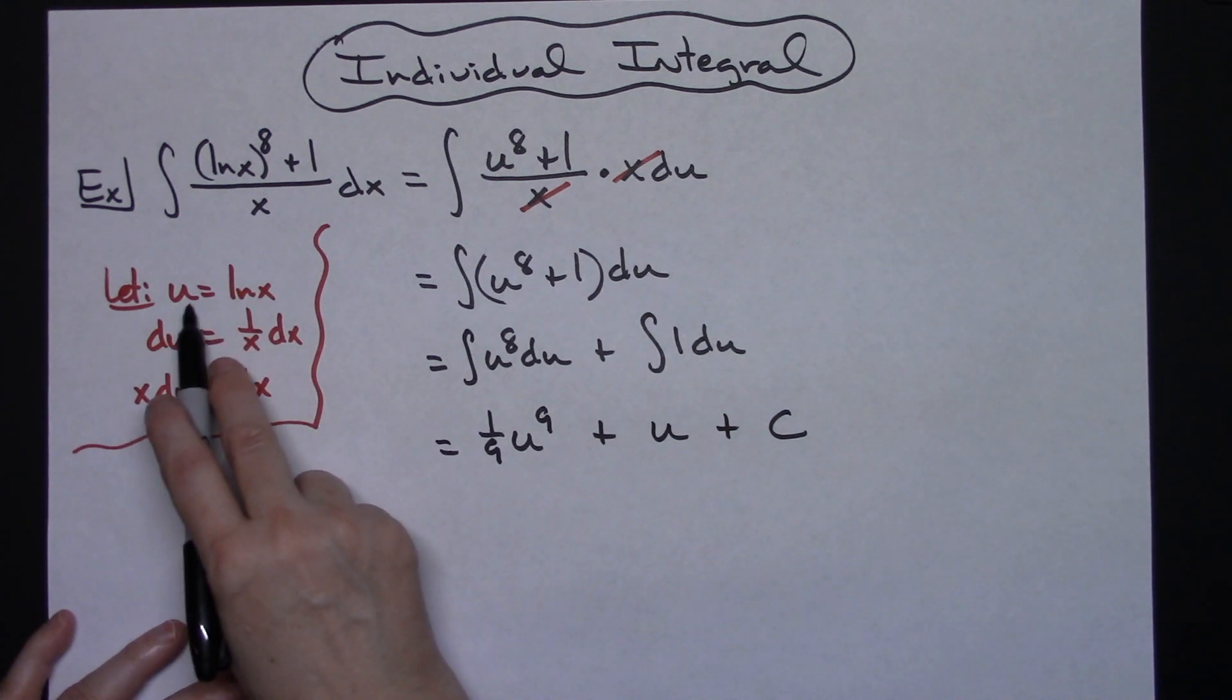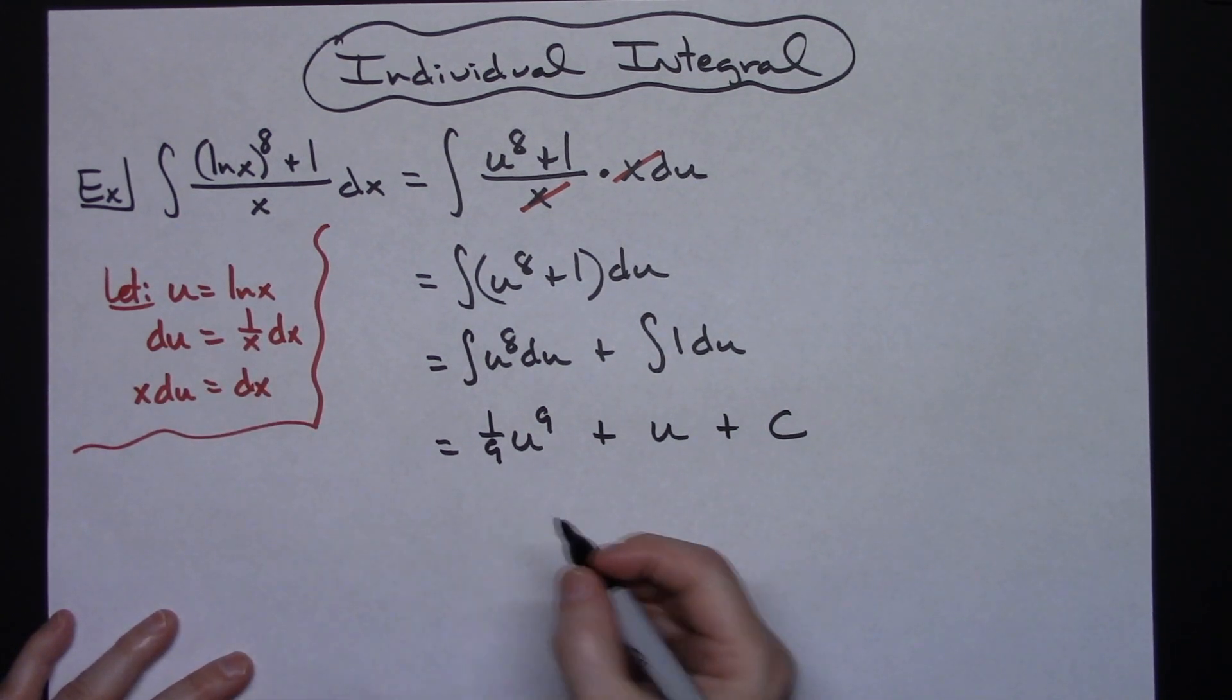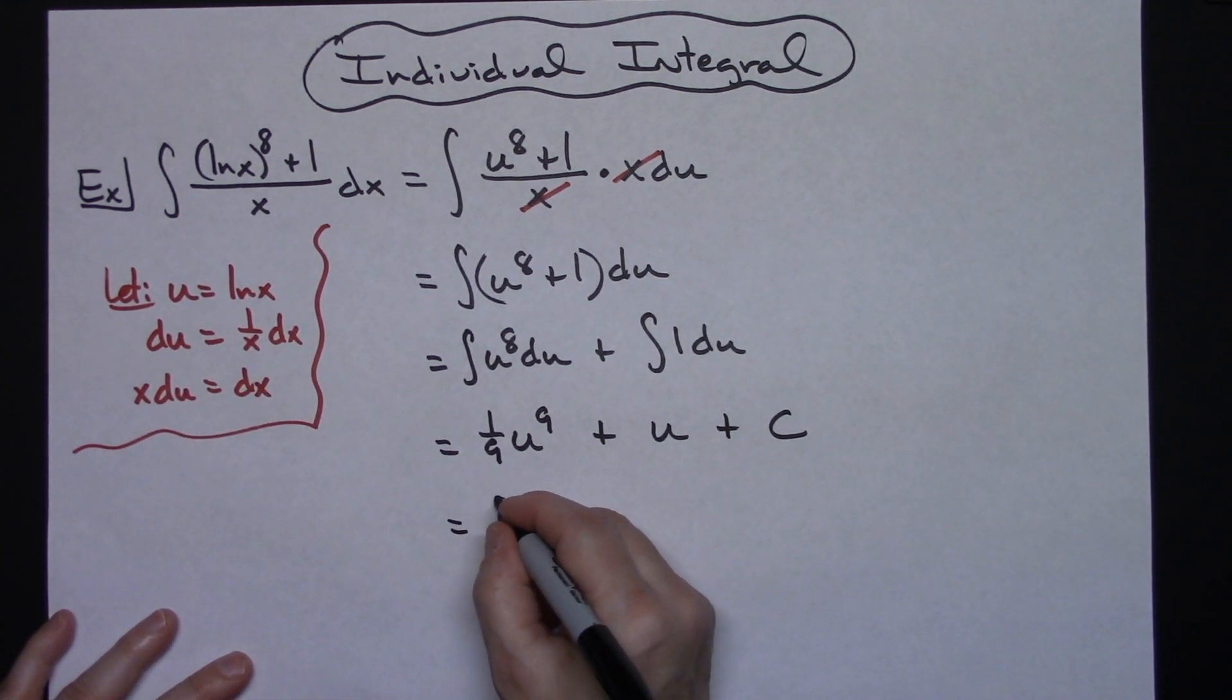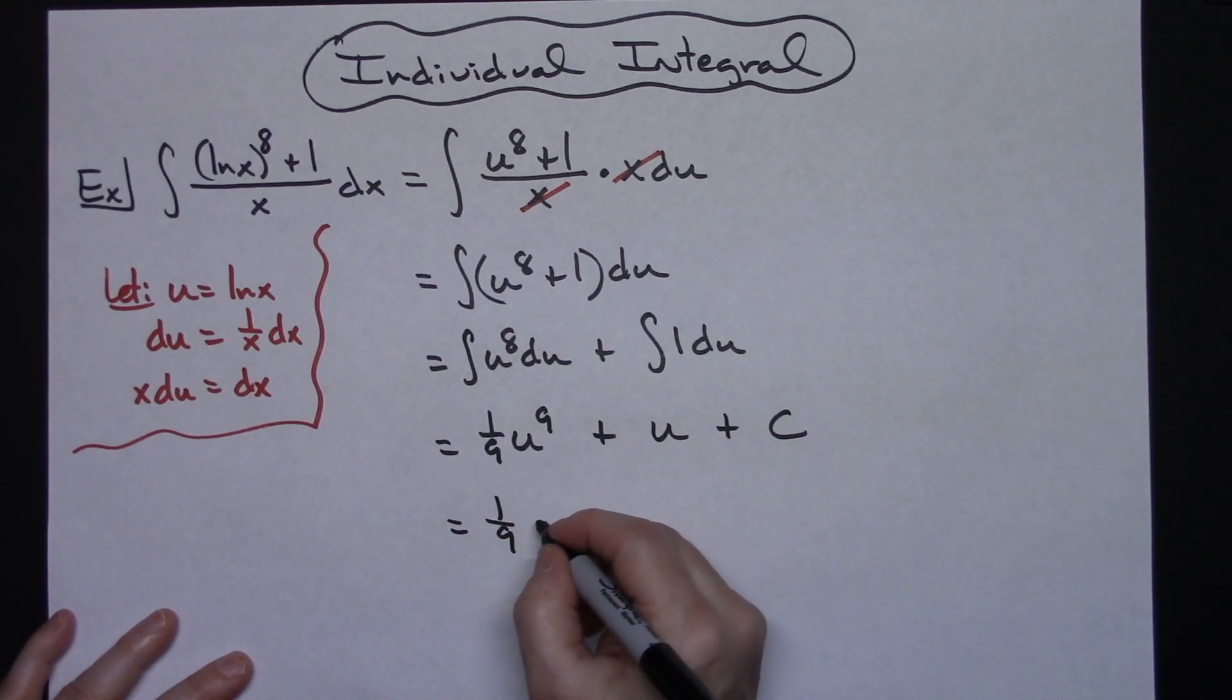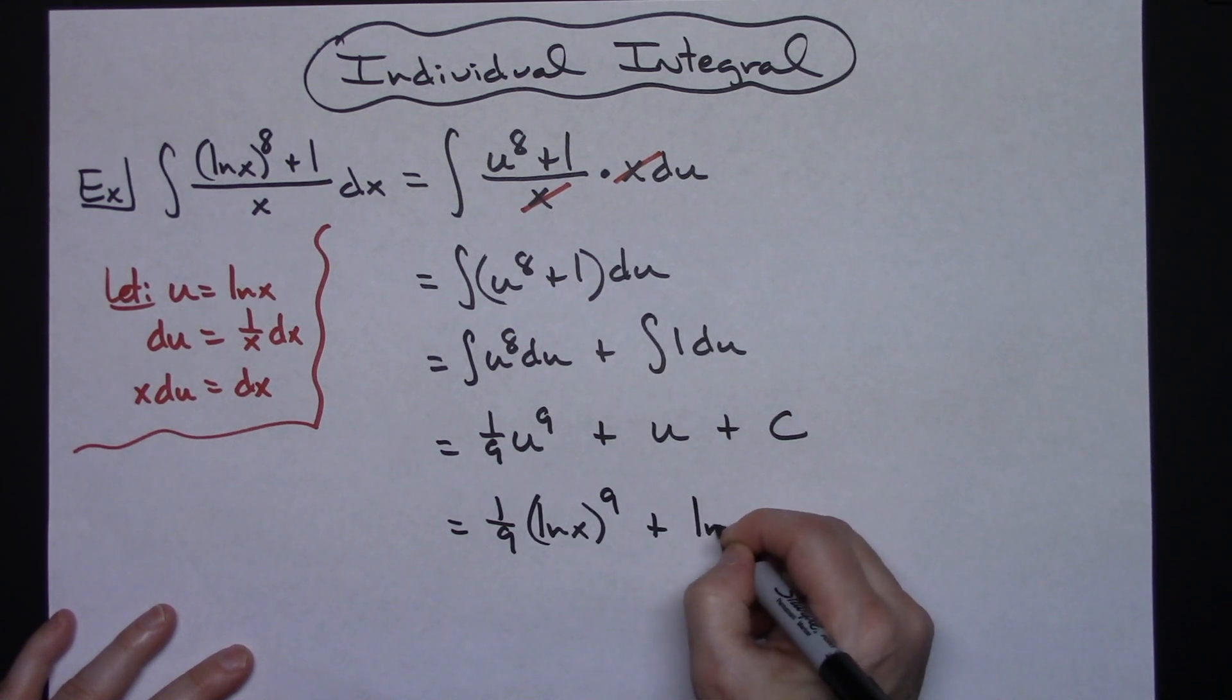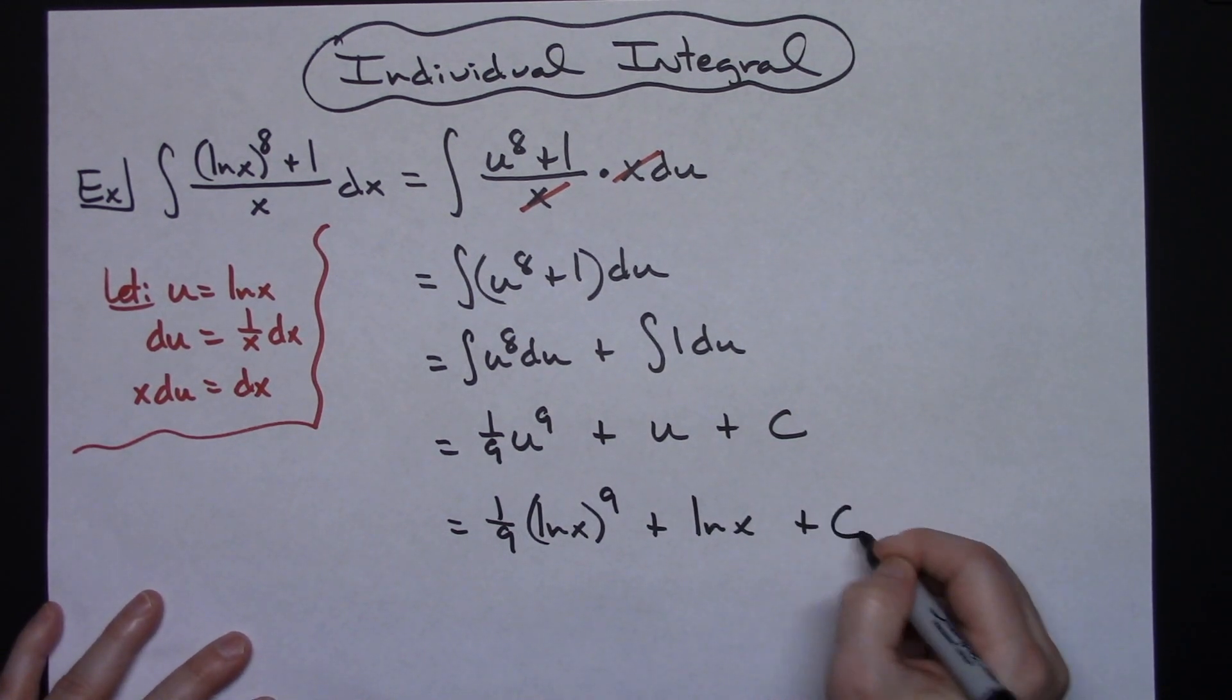I can come back up here and I can replace the u's with what I originally said they were going to be equal to. So I'll have 1 ninth, and then natural log of x raised to the ninth power, plus natural log of x, and then plus C.